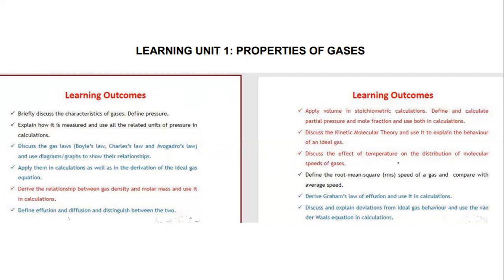We'll discuss the effect of temperature on the distribution of molecular speeds of gases, which ties into kinetic molecular theory. We'll also define the root mean square speed and compare it with average speed — similar to root mean square of voltage in electrodynamics from high school physics, but here we're talking about the speed of a gas, and we'll look at it using a graph.